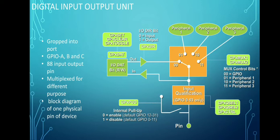The direction register indicates whether you want to use the pin as an input or output pin. The MUX control bit register indicates whether the pin is used as a GPIO pin or connected for a different purpose. For read and write operations on the registers, you use the data registers, which are further divided into three control sets: set register, clear register, and toggle register.